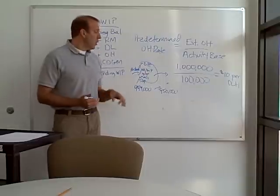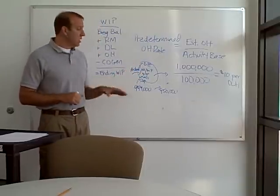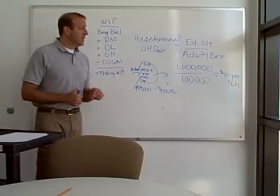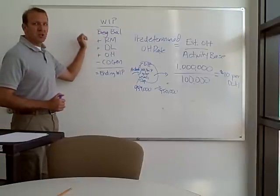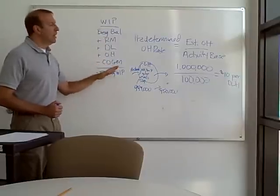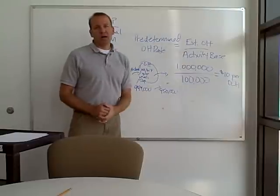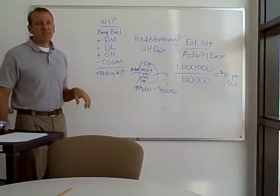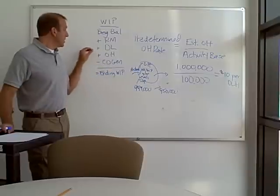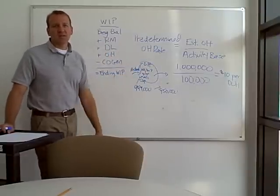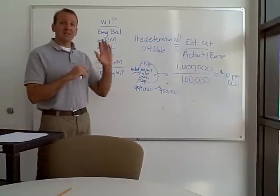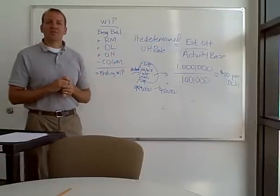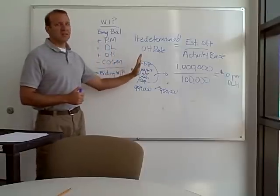This overhead account isn't used in our financial statements, so we have to zero it out at the end of the period. That $49,000 — where will it go? The easiest thing to do is put it into cost of goods sold, because that's where all these costs eventually end up: they go into work in process, then finished goods, then get sold and go to cost of goods sold. Other businesses might analyze it and figure out how much should go to work in process, how much to finished goods, and how much to cost of goods sold. So there are two ways: put all the over- or under-applied into cost of goods sold, or allocate it between work in process, finished goods, and cost of goods sold.